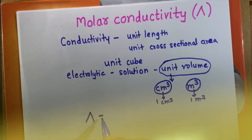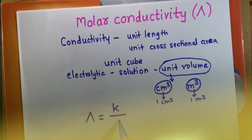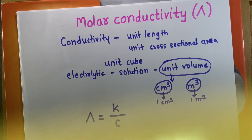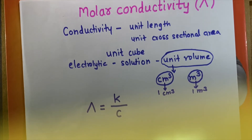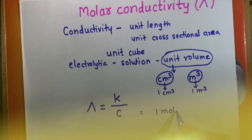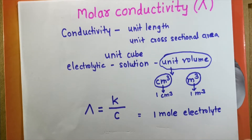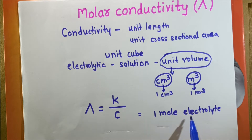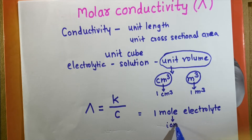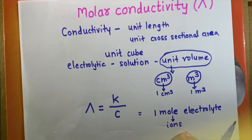Molar conductivity is denoted by lambda (λ) and it equals conductivity (K) divided by concentration (C) of the solution — that is, λ = K/C. Molar conductivity is the conductivity produced due to 1 mole of electrolyte. Suppose 1 mole of electrolyte is dissolved in a solvent to give a solution. Whatever the volume of the solution, the amount of electrolyte is 1 mole, and the conductance produced by the resulting ions is called molar conductivity.